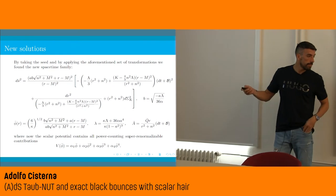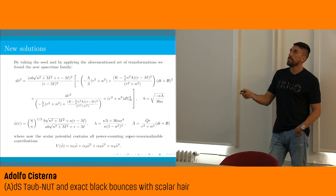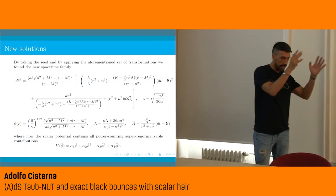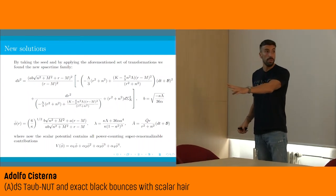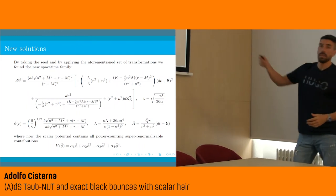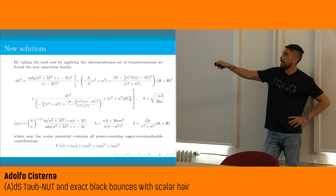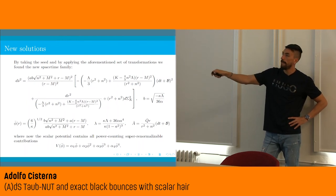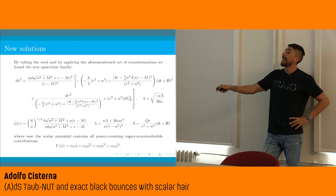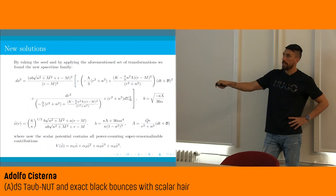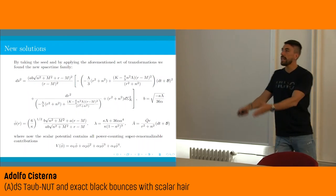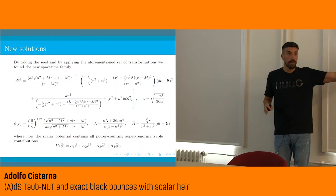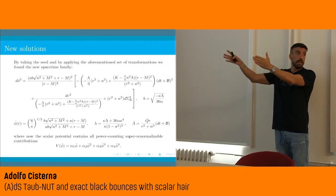Now, the new solution. Taking the previous seed — the metric, scalar, and gauge field — putting them into the transformations, what is delivered to us is this metric: again of the form of the previous metric in brackets, times a conformal factor. The scalar field gets a shift, there is an effective cosmological constant, and the scalar potential that was conformal in the seed now gets all the modifications converting it into the super-renormalizable potential. This is our new Taub-NUT type solution.